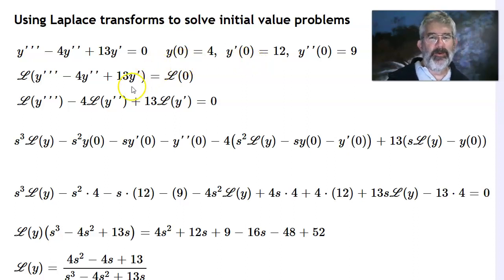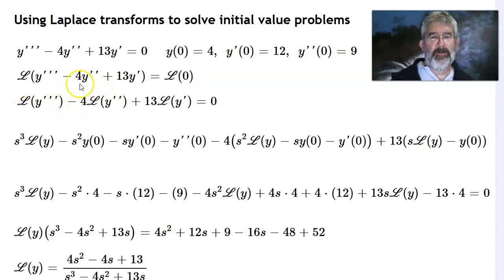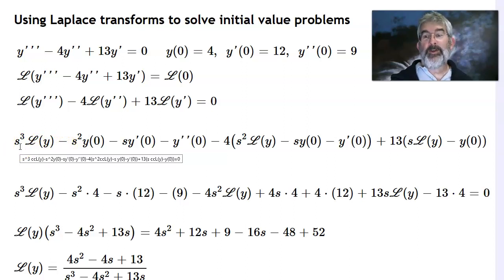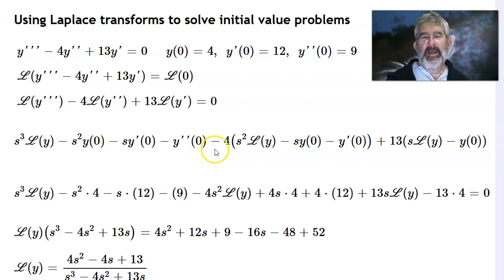So take the Laplace transform on both sides. It's kind of nice when it's homogeneous because that Laplace transform on the right is just 0. The Laplace transform is a linear operator, and we can distribute it over the addition, and then the constants come out as well. The Laplace transform of the third derivative is s cubed times the Laplace transform of y minus s squared y of 0 minus s y prime of 0 minus y double prime of 0. Of course, those are all your initial conditions that are given.